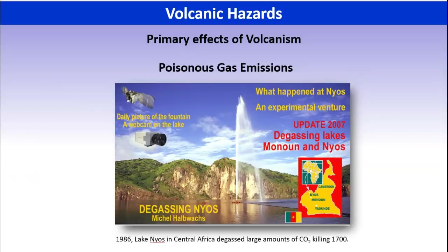Poisonous gases can be an issue for sure. CO2 isn't poisonous per se, but because it's heavier than air it can sink into low-lying areas and displace oxygen. If you live in those low-lying areas and a huge amount of CO2 is released from a volcano, it can settle into these low-lying areas, displace the oxygen, and anything in that area would suffocate because there's no oxygen anymore.